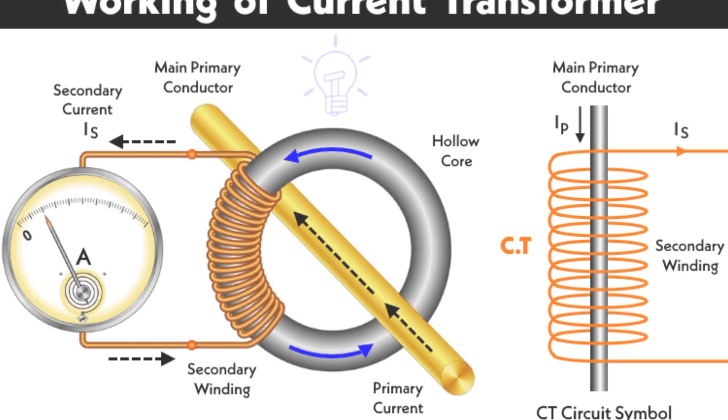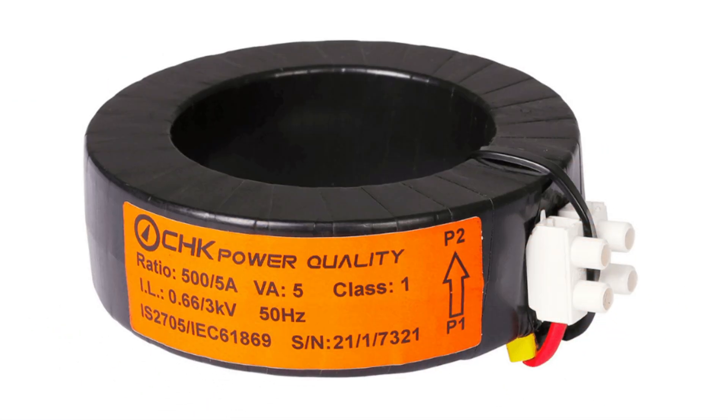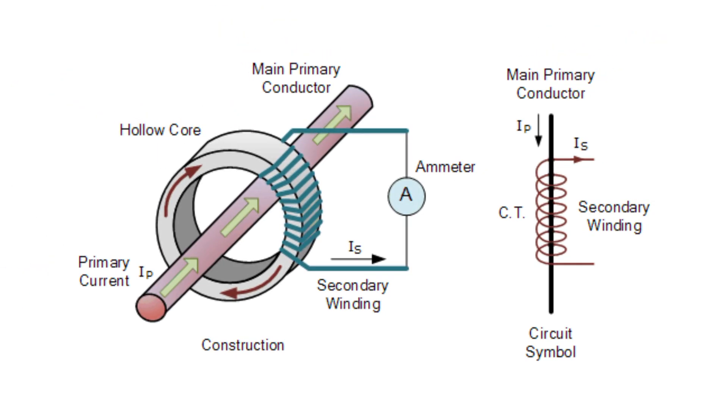secondary winding. The primary winding carries the high current which induces a magnetic field, and that induces a voltage in the secondary winding. The secondary winding has a much higher number of turns than the primary